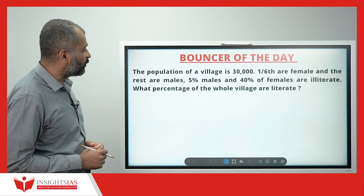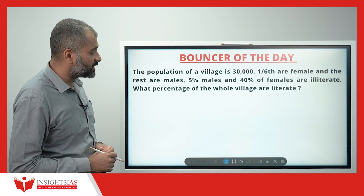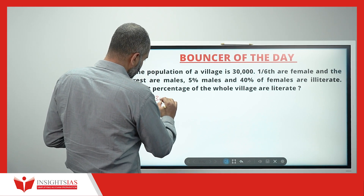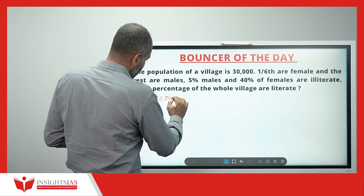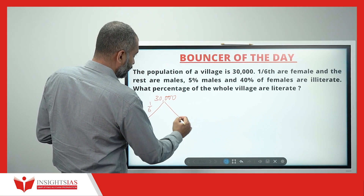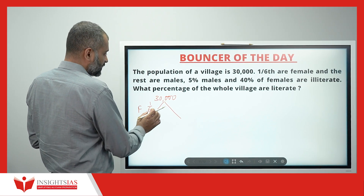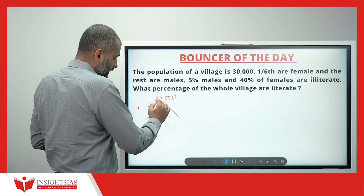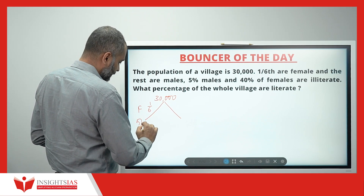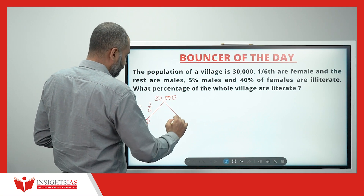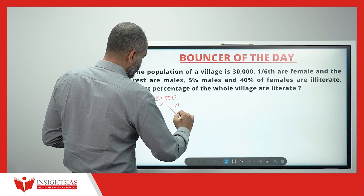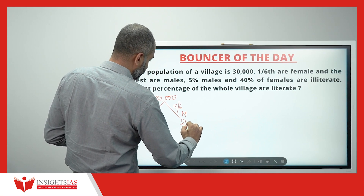Yesterday's bonus question: The population of a village is 30,000, of which 1/6 are female. So 1/6 of 30,000 is 30,000 divided by 6, which is 5,000. Rest are male, so males are 5/6, which is directly 25,000.